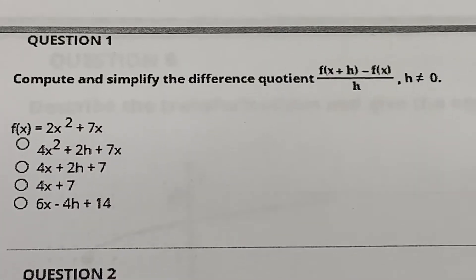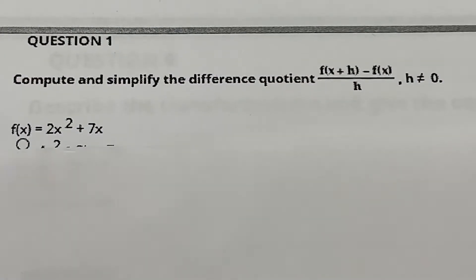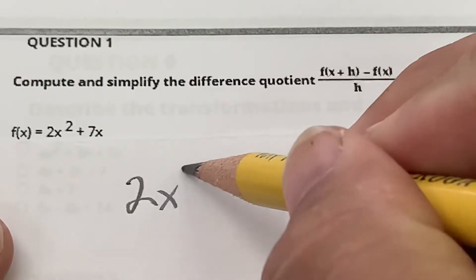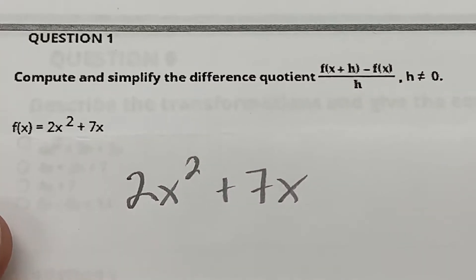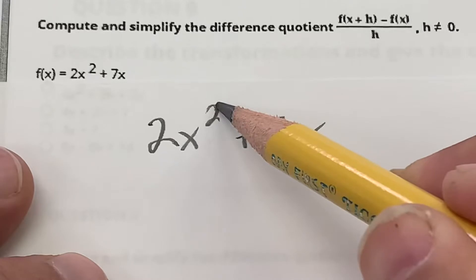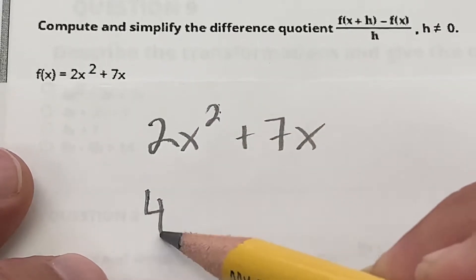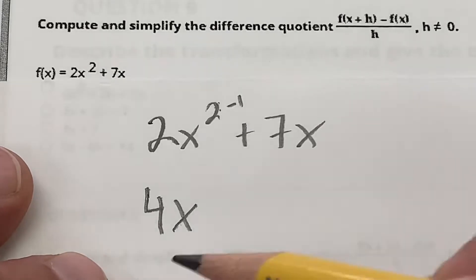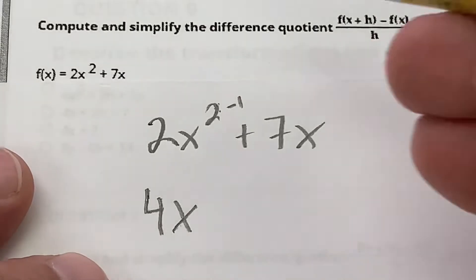The first one is a difference quotient — I'm actually going to do the derivative. So for 2x² + 7x, there's a shortcut. You do the power times that number: 2 times 2 gives me 4x, then subtract 1 from the exponent, so that's 4x to the first.